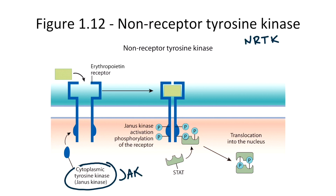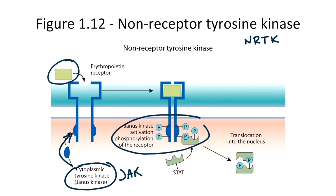When a ligand binds to the NRTK receptor, a conformational change attracts cytoplasmic JAK to the intracellular component of the NRTK receptor. The JAK contains the kinase enzymatic function that is responsible for phosphorylation of the JAK proteins and the intracellular portion of the receptors. Once the complex is phosphorylated, it can then attract STAT proteins. STAT stands for signal transducer and activator of transcription. STAT proteins are then phosphorylated and translocate into the nucleus where they alter transcription. So remember, NRTKs act on the JAK-STAT pathway.